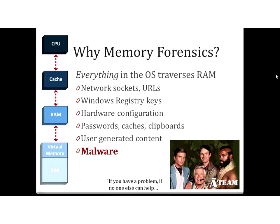Memory forensics is so important because memory is really the critical choke point that we see on a computer system. It is the bridge that everything passes through from the disk all the way up to the CPU. So we can get virtually anything out of memory — from standard URLs or web traffic, to open network sockets, to in some cases complete copies of registry keys and values, a large amount of information on hardware configuration, and things like what USB keys or removal devices may have been placed on that system. One of the really interesting areas of research is passwords, particularly as we get into the world of full-disk encryption. And of course, malware is probably easiest to find in a memory image — if I had one artifact to identify a system infected with malware, I would almost certainly pick the memory image.